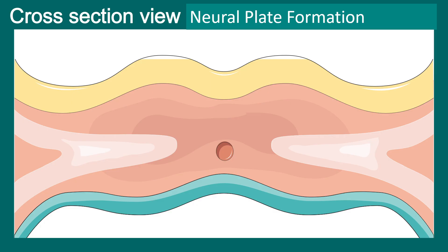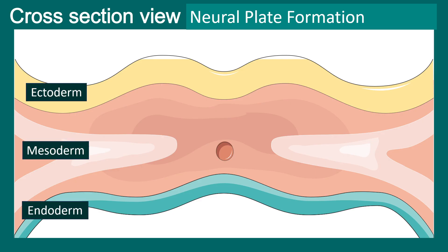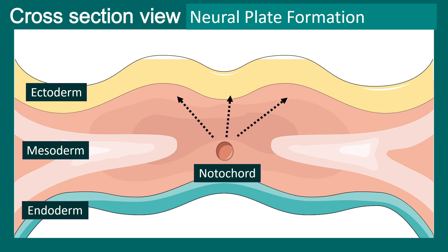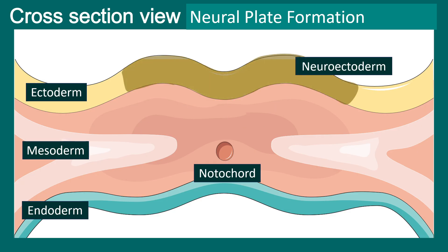Now let's look at the neural tube closure from a cross-sectional view. We are not looking at the embryo from the top view anymore; we are looking at it from the cross-sectional view. Here are the three germ layers, and this is the notochord. The notochord secretes several factors — morphogens, importantly sonic hedgehog — which actually induce the ectoderm just above it. This ectoderm is now termed neuroectoderm.